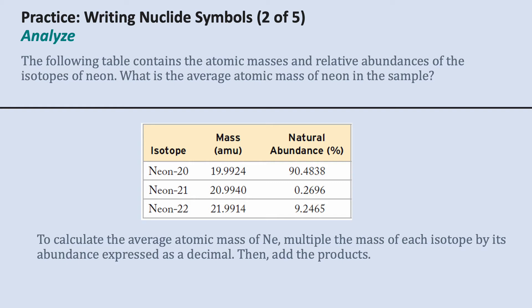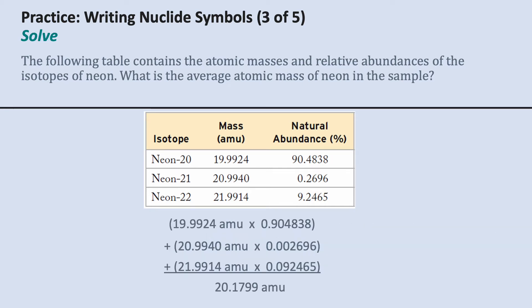The natural abundances are given as percentages, and depending on how you like to set this up, you're probably going to convert all of it to a decimal instead. This is a nice way to have the math written out, because we have it by isotope.